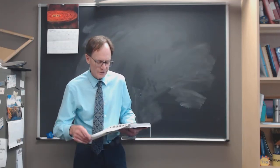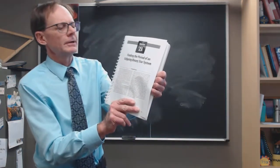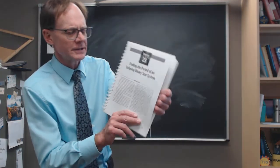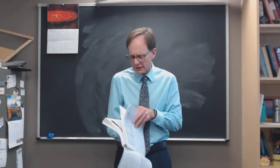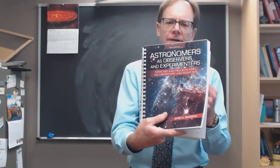Hello everyone, this is Professor Jeff Wilkerson with an introduction to Exercise 23, Finding the Period of an Eclipsing Binary Star System, from the Astronomy Lab Book, Astronomers as Observers and Experimenters, as published by Kendall Hunt.